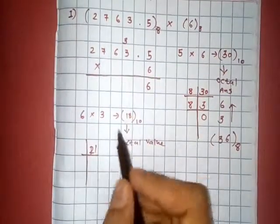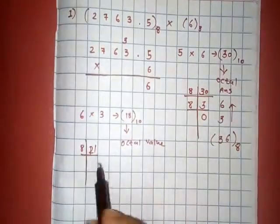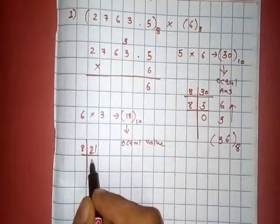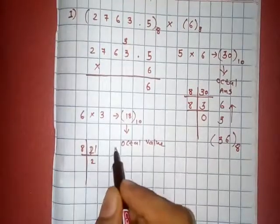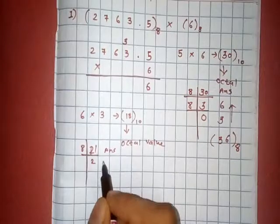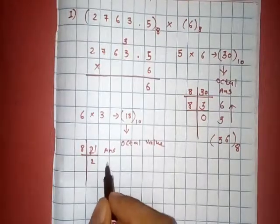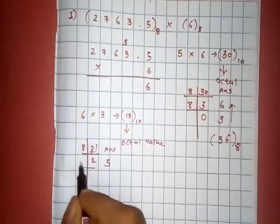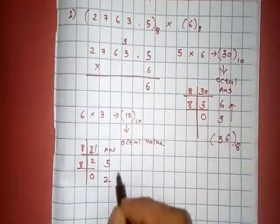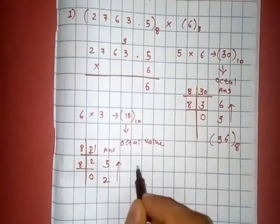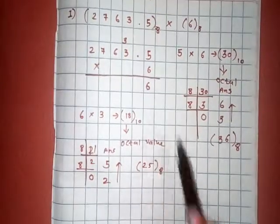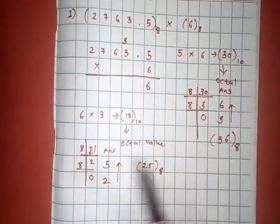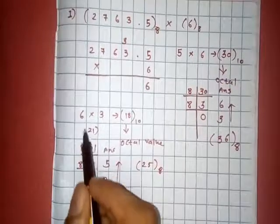8 twos are 16, 21 minus 16 is 5. 8 into 0 is 0, remainder is 2.